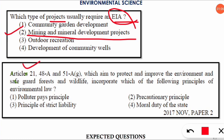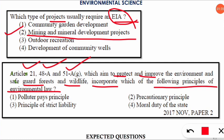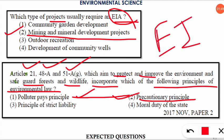The next question is: Articles 21, 48A and 51A, which aim to protect and improve the environment and safeguard the forest and wildlife, incorporate which of the following principles of environmental law? The correct option is option number two — these follow the precautionary principle. The polluter pays principle and precautionary principle are very important as per EIA. A PDF of these two principles will be uploaded to the Telegram group.